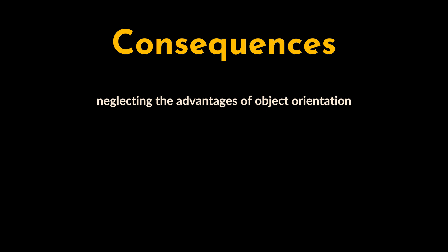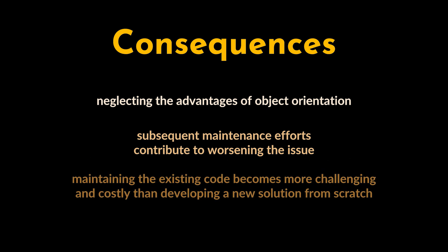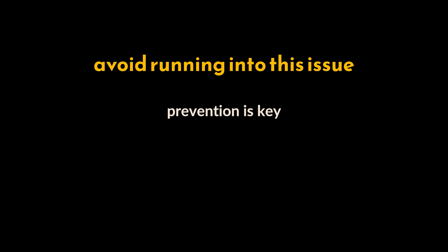The presence of spaghetti code neglects the advantages of object orientation — the system lacks extensions through inheritance and polymorphism is not used. Additionally, subsequent maintenance efforts contribute to worsening the issue, and the software rapidly enters a state of diminishing returns where maintaining the existing code becomes more challenging and costly than developing a new solution from scratch.